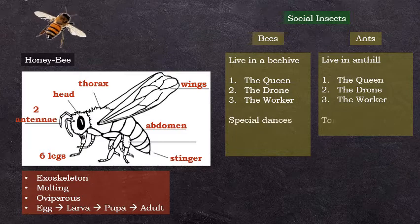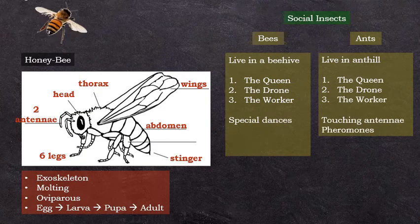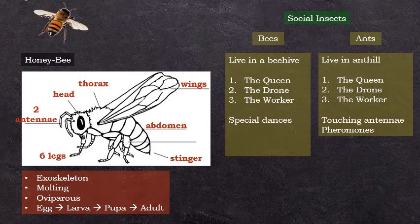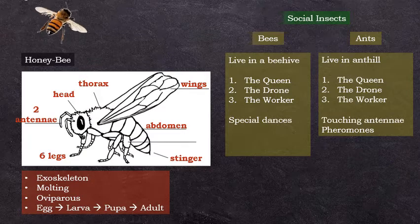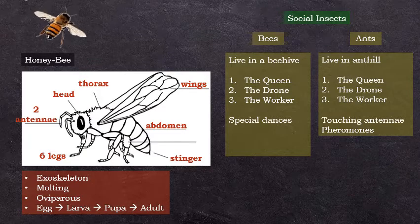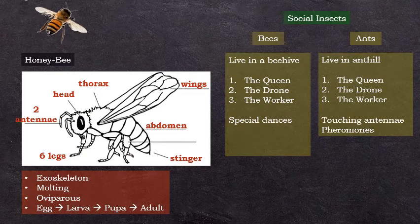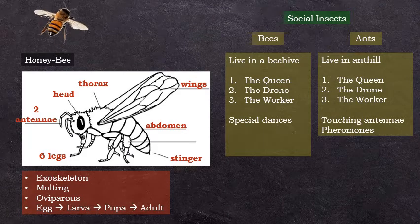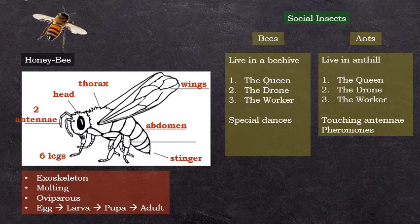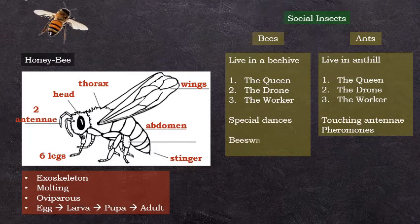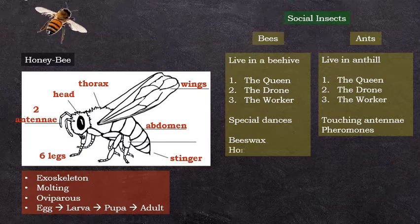Bees communicate with each other by special dances, while ants communicate by touching and by releasing pheromones. Bees are beneficial insects since they pollinate plants.